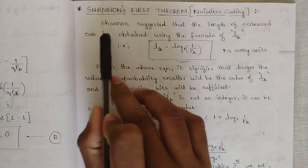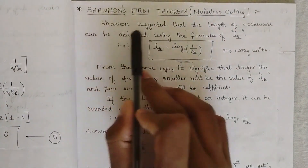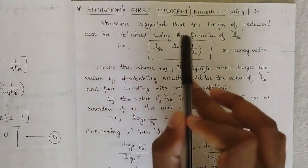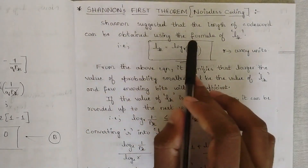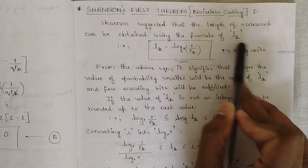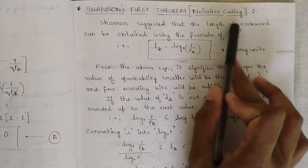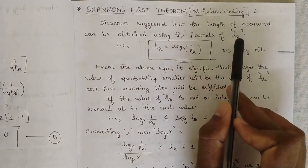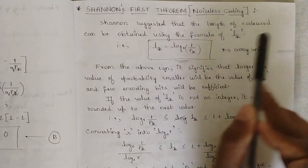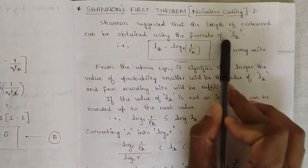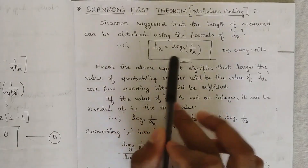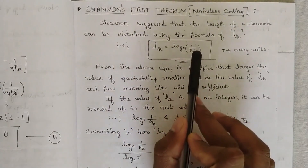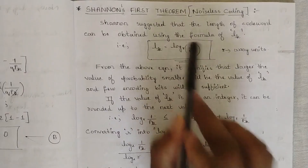Shannon's first theorem. Shannon suggested that the length of a code word can be obtained using the formula L suffix K. This is the standard formula for calculating the length of the code word. L suffix K is defined as L(K) = log(1/P(K)) to the base R.